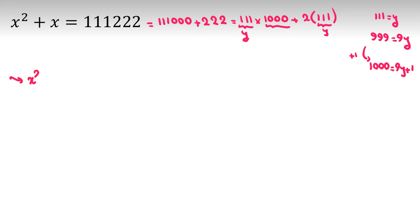We can conclude x squared plus x equals this is 9y plus 1, so it will be y times 9y plus 1, plus 2y. So it will be 9y squared plus y plus 2y.